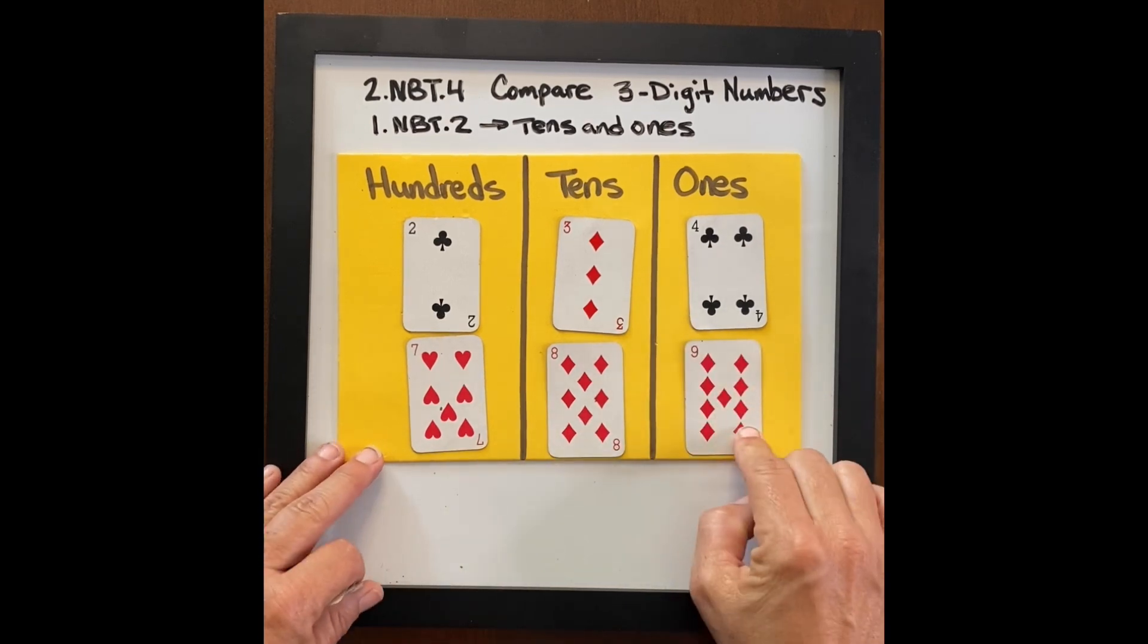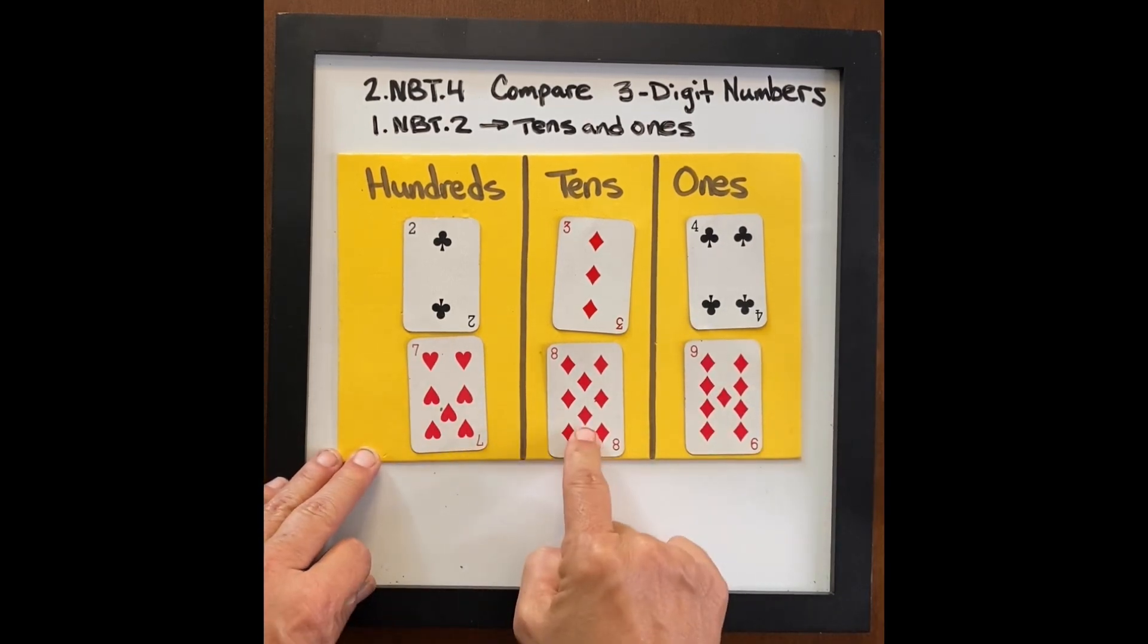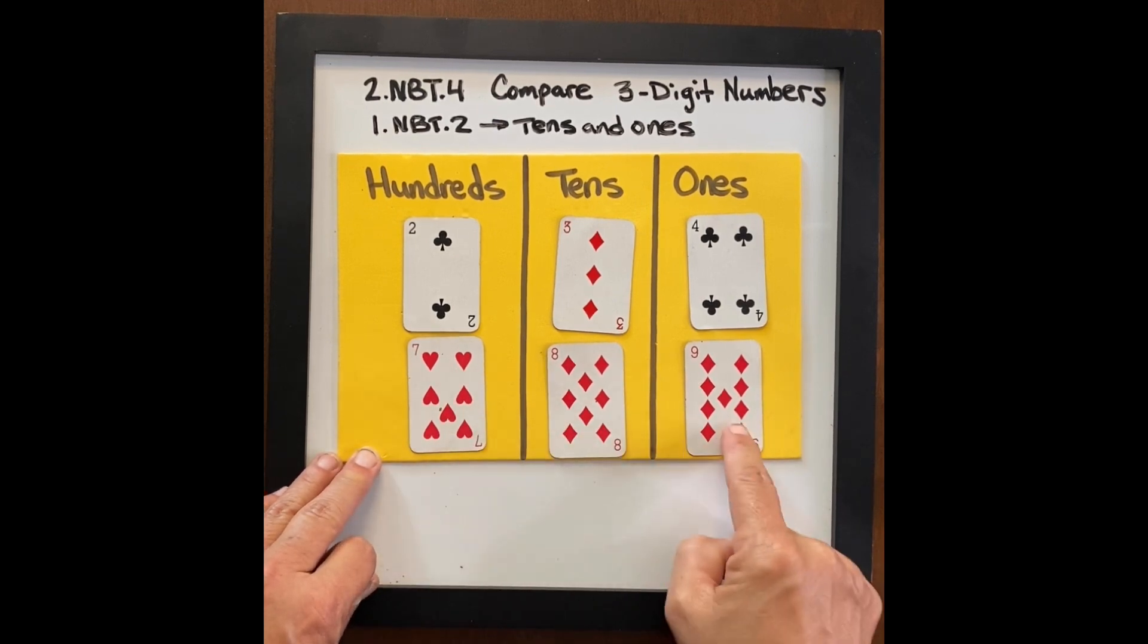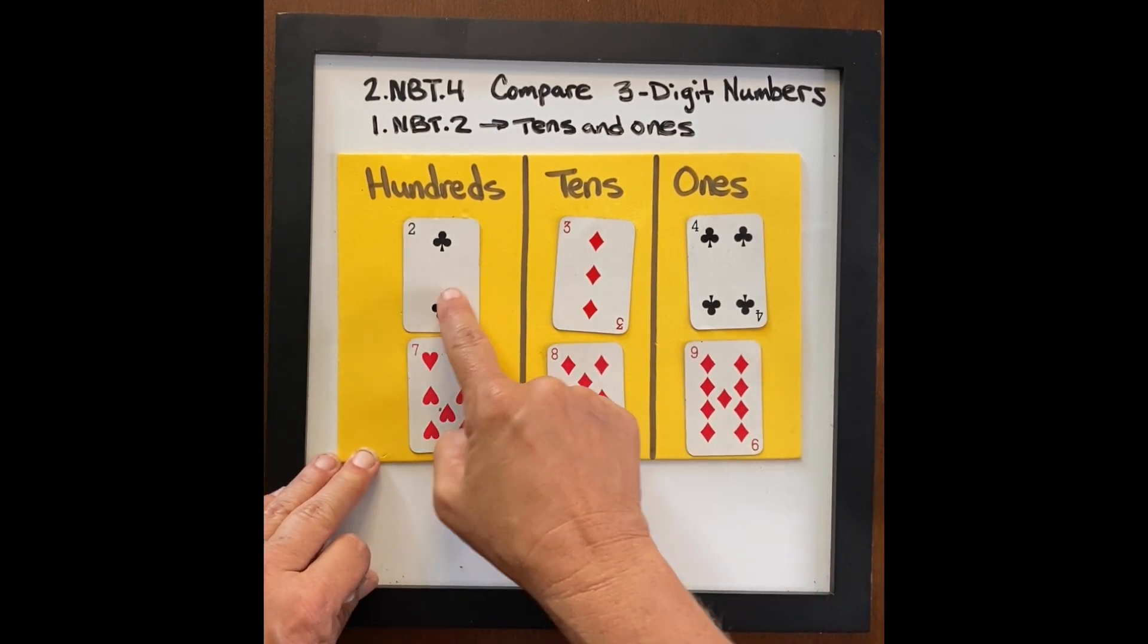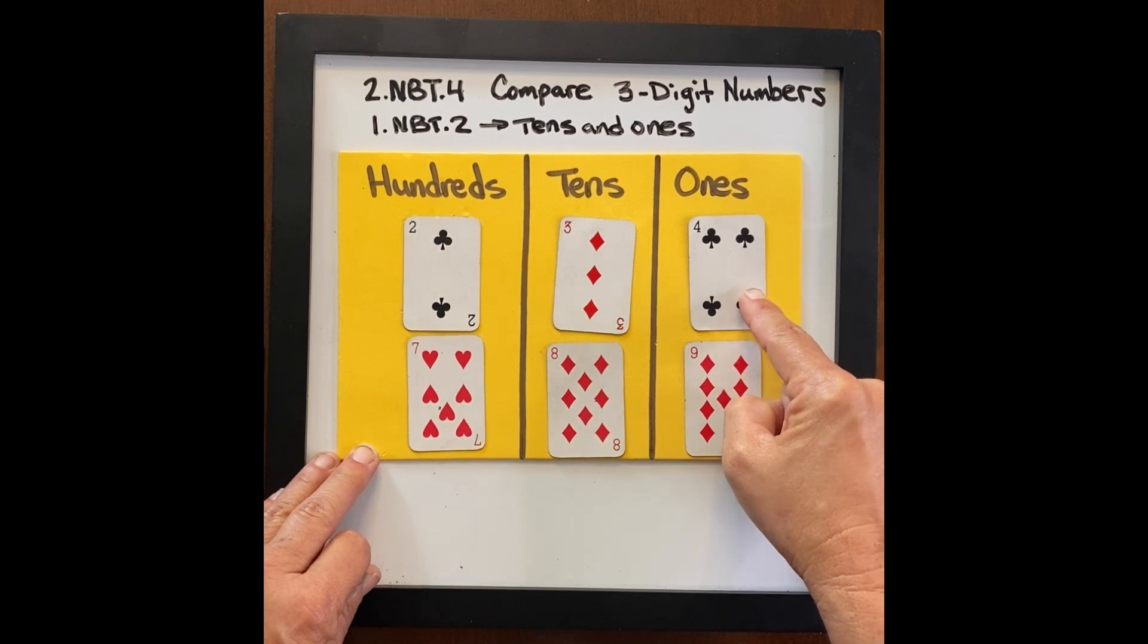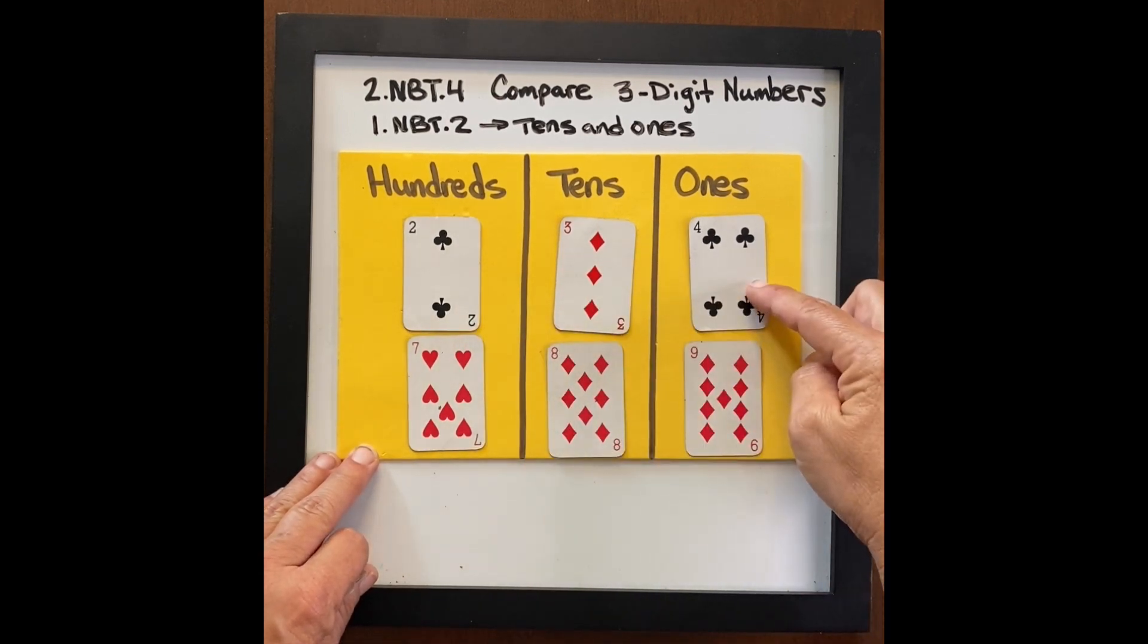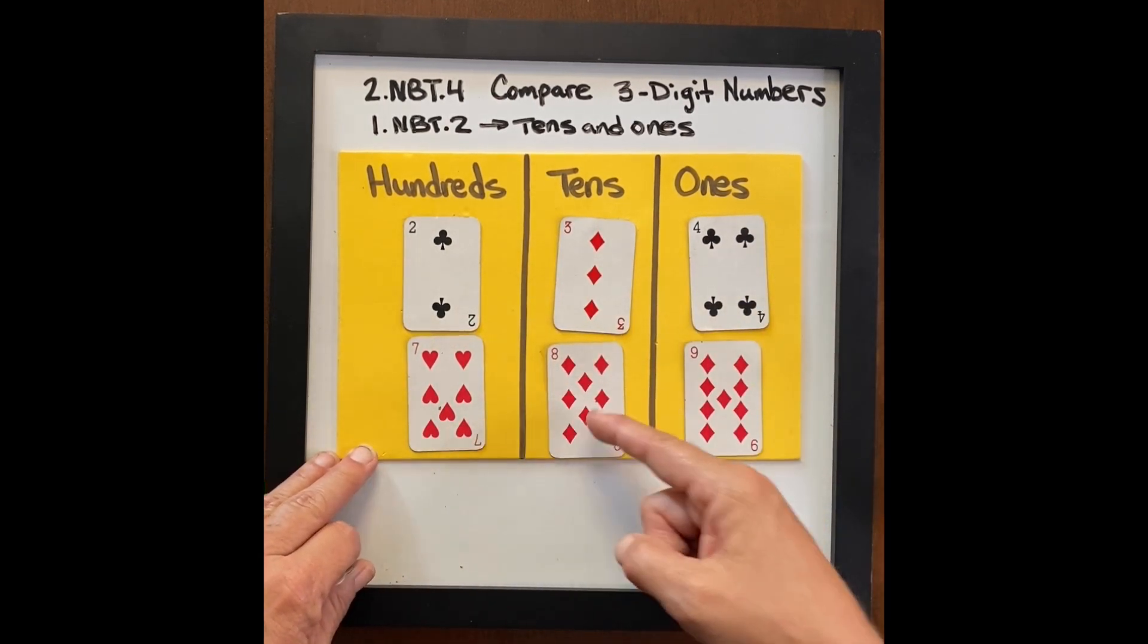Now we have nine ones, seven hundred eighty nine. We know that seven hundred eighty nine is greater than two hundred thirty four. We also know that two hundred thirty four is less than seven hundred eighty nine.